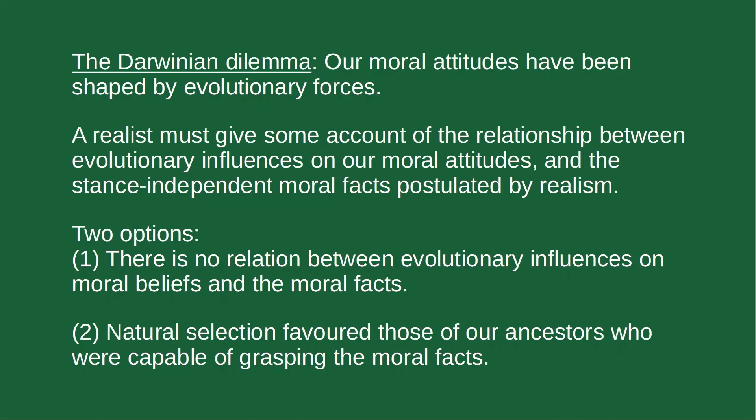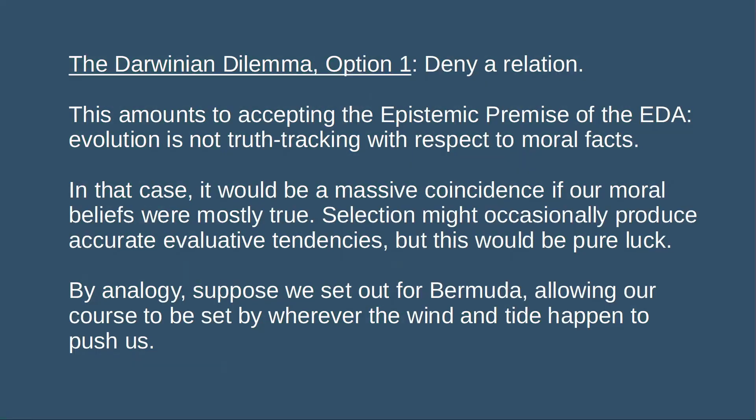Option one: the realist can hold that there is no relation between the evolutionary influences on our moral beliefs and the stance-independent moral facts. This amounts to accepting the epistemic premise of the debunking argument — accepting that evolution is not truth-tracking with respect to moral facts. In this case, the argument is that there's no reason to think natural selection has pushed us in the direction of moral truths, so we have no grounds for supposing our moral beliefs are true. Street gives the analogy of setting out on a boat to get to Bermuda but allowing one's course to be determined by whatever way the wind and tide happen to push you.